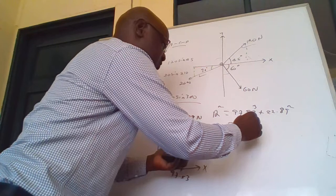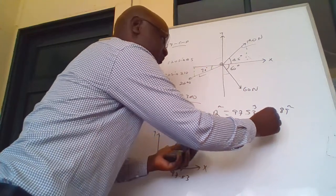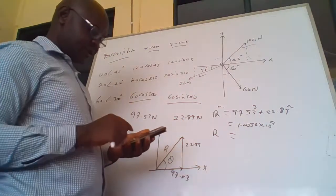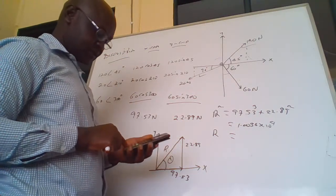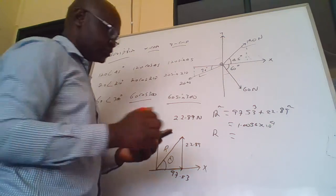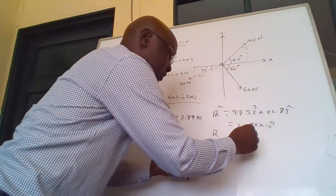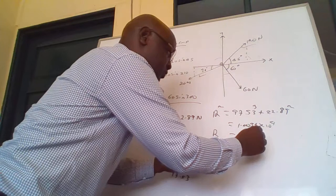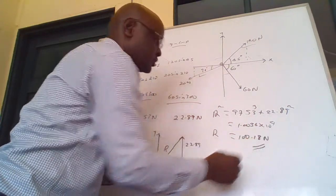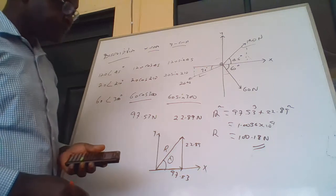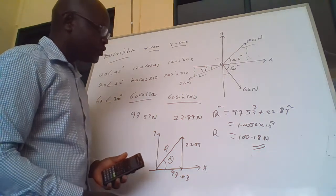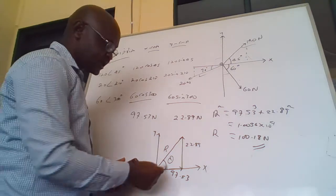R squared equals 1.0036 times 10 to the power of 4, so R equals the square root of that answer. Therefore R equals 100.18 Newtons. That is the magnitude of the resultant force.